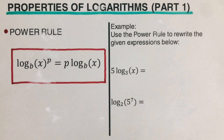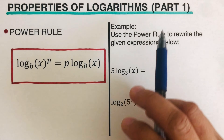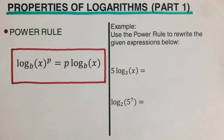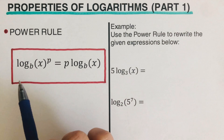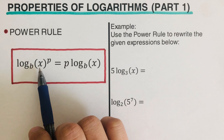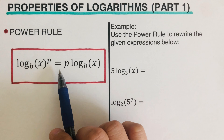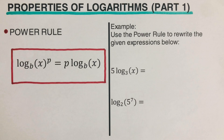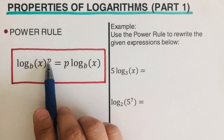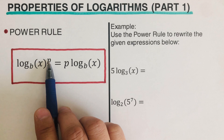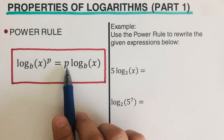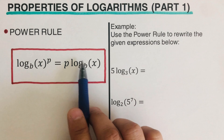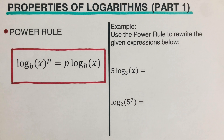Hello everyone, in this video we're going to look at the properties of logarithms, and this is the first part. Let's take the first property: the power rule. The power rule states that log of x to the exponent p, to the base b, is equal to p times log of x to the base b. Anytime we have an exponent, that exponent can be rewritten as a coefficient of the whole log expression.